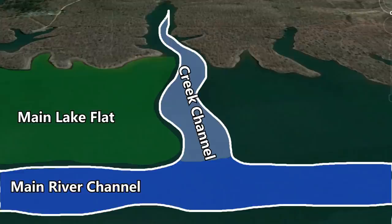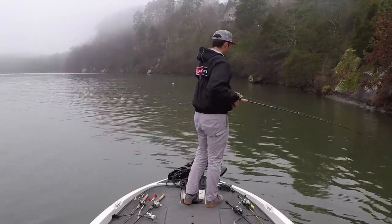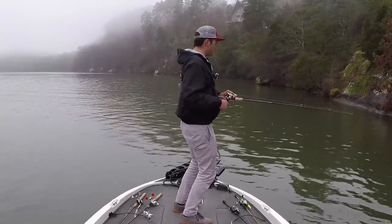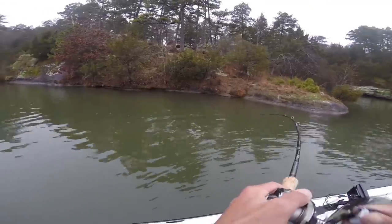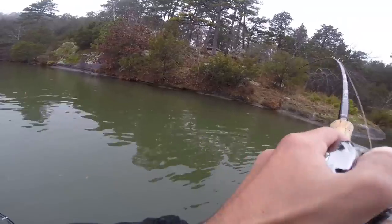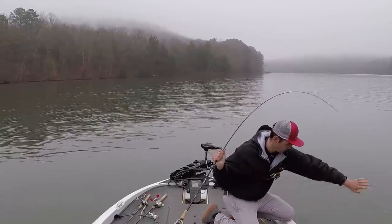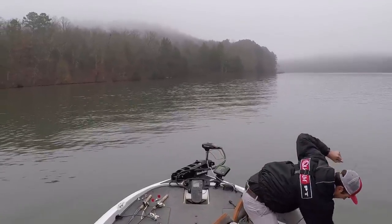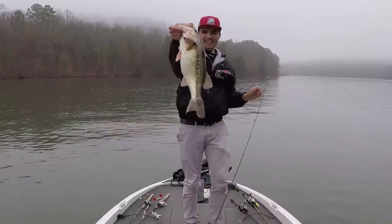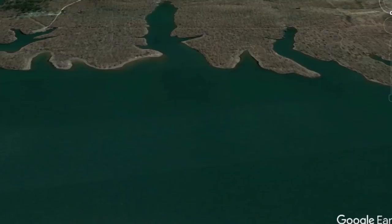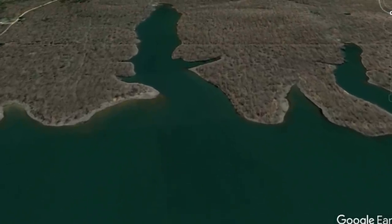Another great place to find winter bass related to creek channels is bluff walls — any place where a creek channel runs right up next to the bank, creating a sharp drop from two or three feet on the shore down into 30 or 40 feet of water. I target these bluff walls with a jerkbait or football jig, casting parallel down the wall and working it nice and slow. When the sun comes up, fish pull close to the wall and feed on dying shad, and you can catch a lot of really big bass.